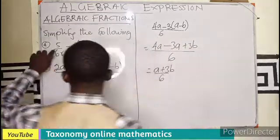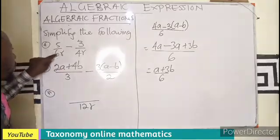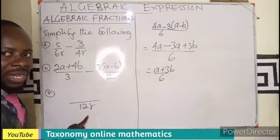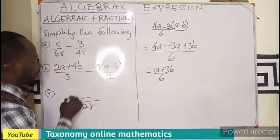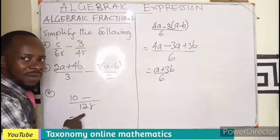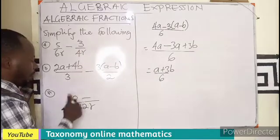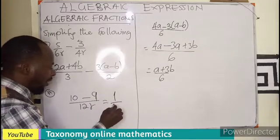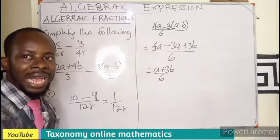So our LCM is going to be 12r because 6r can go into 12r only 2 times. Meaning when you divide this, the r will cancel, the 6 will go into 12, 2 times. That 2 will multiply our 5 to give us 10 minus 4r into this will just be 3. Because we are having 12r over 4r, the r will cancel, 4 will go into 12, 3 times. So 3 times 3 is 9. So now we can simplify the top to have 1 over 12r. So the answer we are just looking for is just 1 over 12r as the final answer.